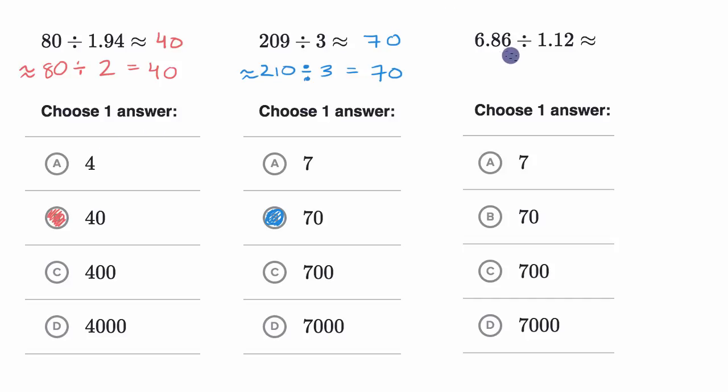All right, so here, I would just try to round to the nearest whole number and see if that helps my division in my head. So 6.86 is approximately seven if we round up to the nearest whole number. And if we round down 1.12, seven divided by one, this is much easier for us to do in our head. So that is going to be seven.